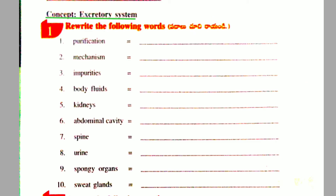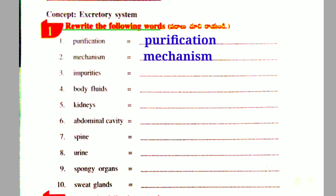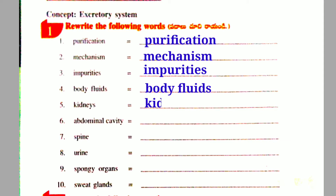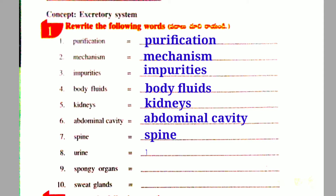First Activity: Rewrite the following words — Purification, Mechanism, Impurities, Body Fluids, Kidneys, Abdominal Cavity, Spine, Urine, Spongy Organs.